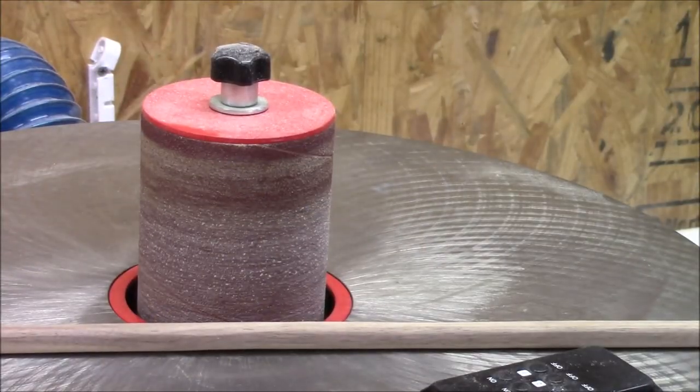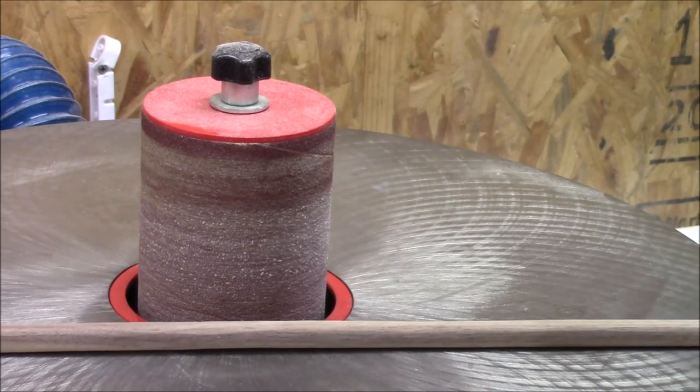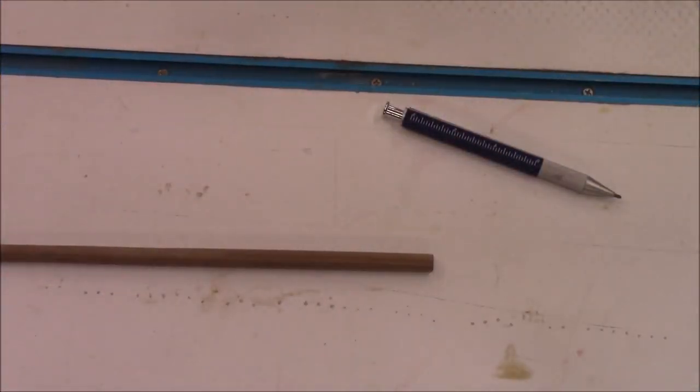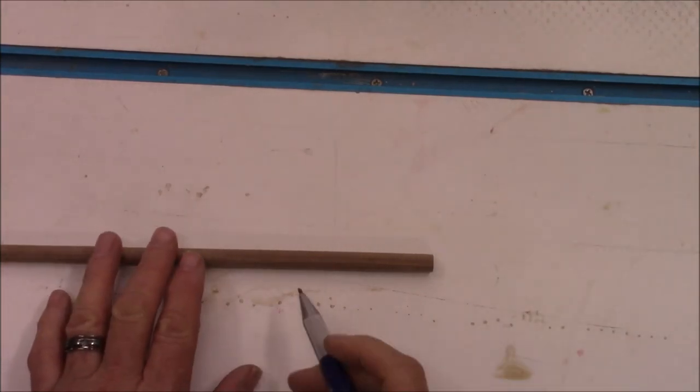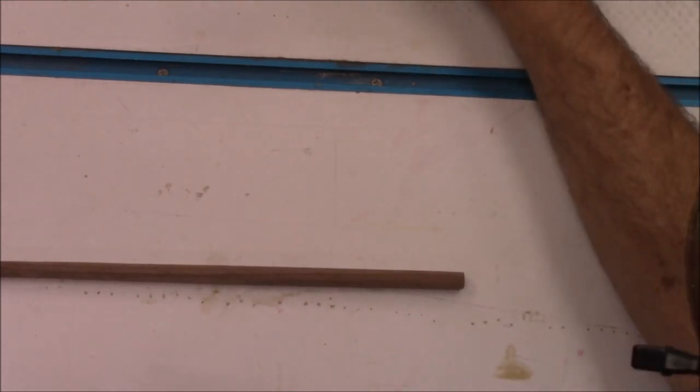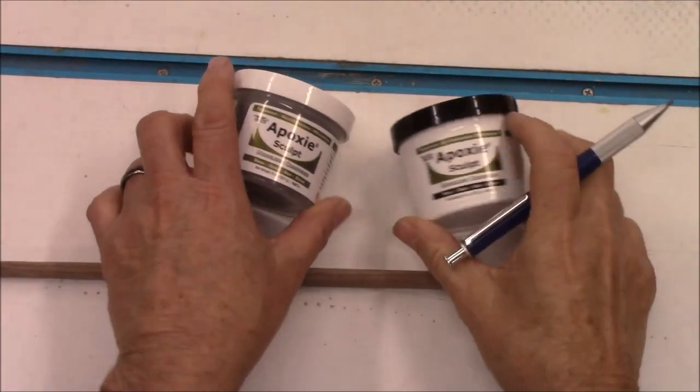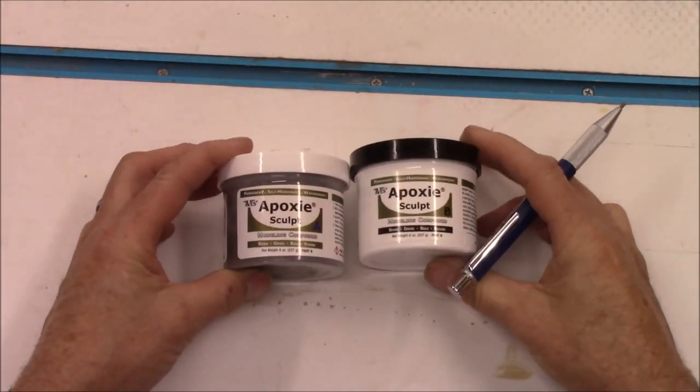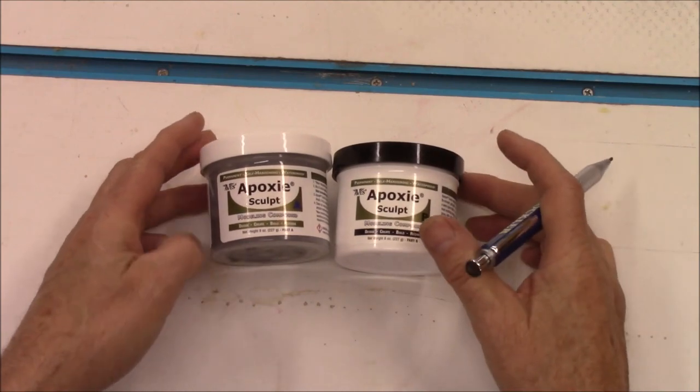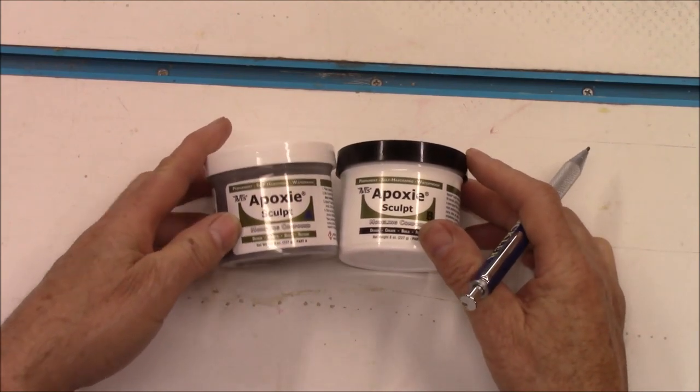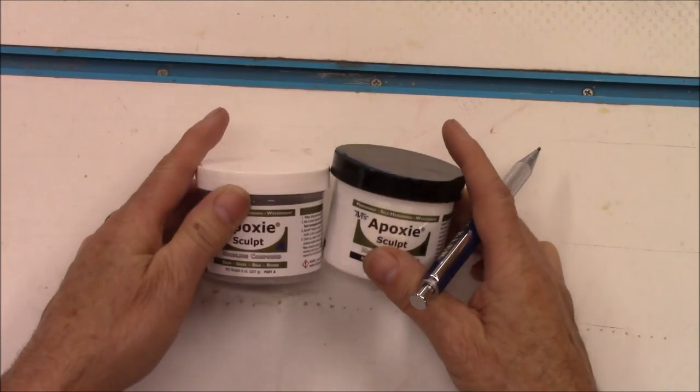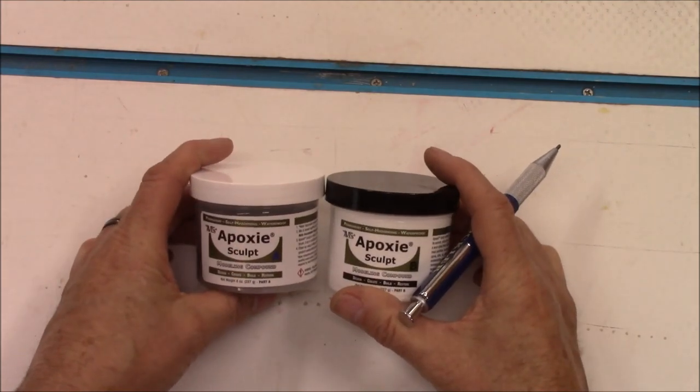I'm going to continue to shape our wand on the spindle sander. Today we're going to form the handle with some molding epoxy. This is used by sculptors and it's got a two hour open time. I'll leave a link in the description below. That gives me a long time to shape and mold, and then it cures nice and hard and I can paint it so the wand will look authentic. It's a two part epoxy, A and B, equal amounts.